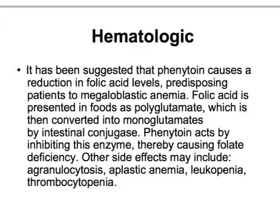They may give you a clinical scenario where a patient has a long history of seizures and presents with breathlessness and signs of anemia — you need to think of phenytoin-induced megaloblastic anemia. Folic acid is present in foods as polyglutamate, which is converted to monoglutamate by intestinal conjugase. Phenytoin acts by inhibiting this enzyme, thereby causing folate deficiency.